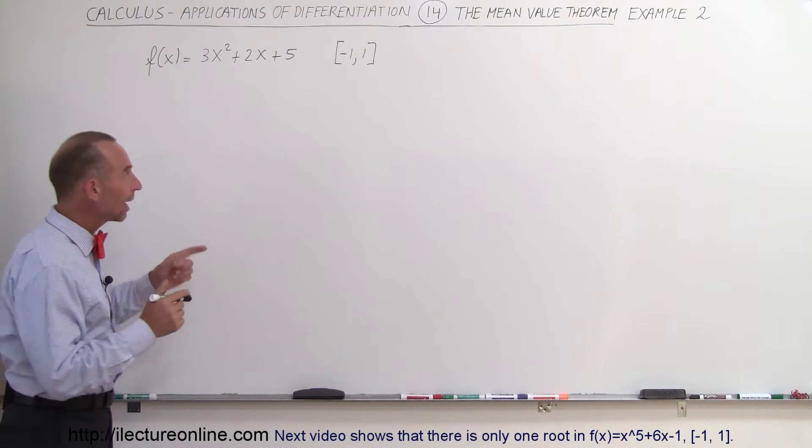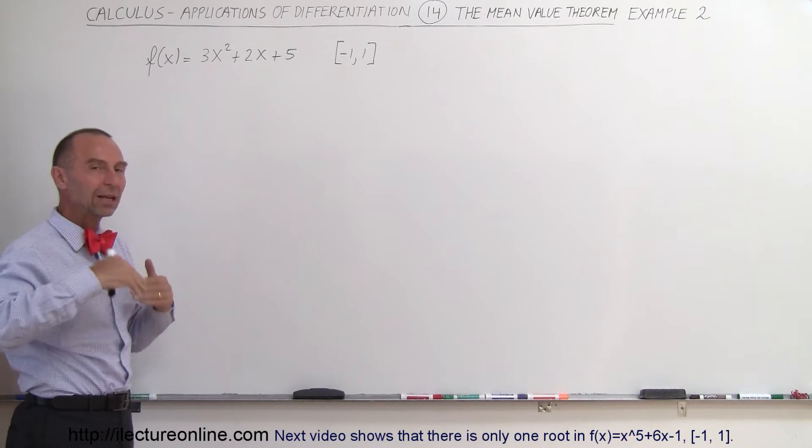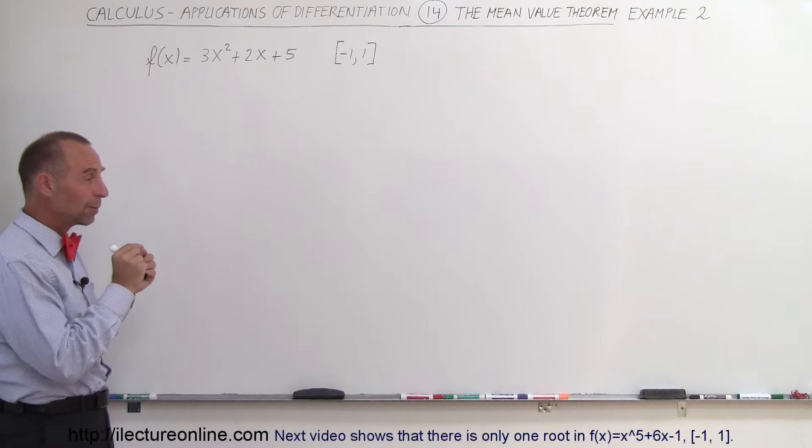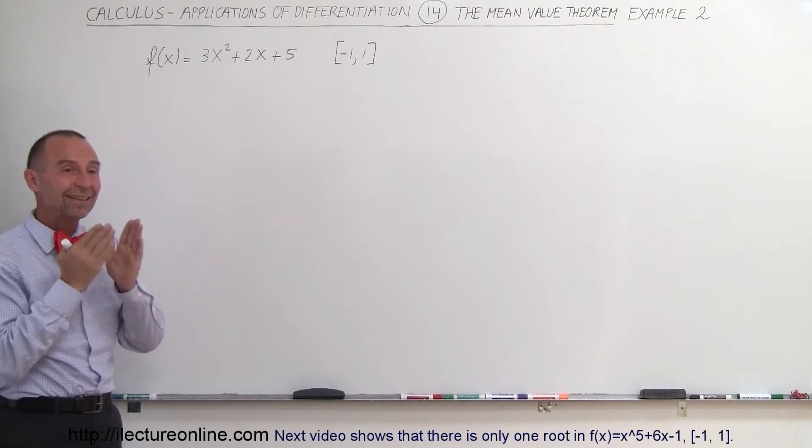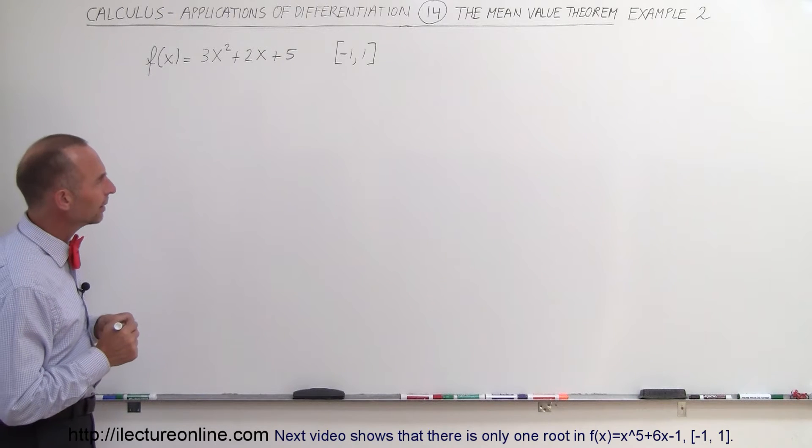So again the idea is that we have two endpoints. If we connect those two endpoints with a straight line we get a slope, and the function—if we take the derivative of the function—we should be able to find the point where we get the exact same slope. Alright, let's try that.